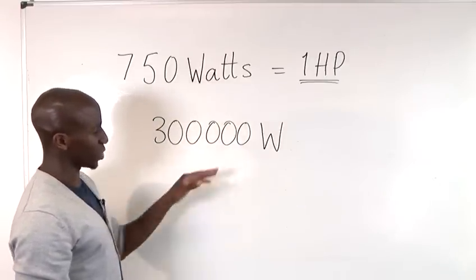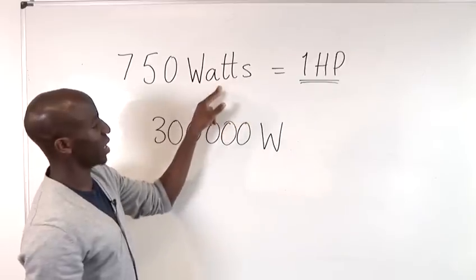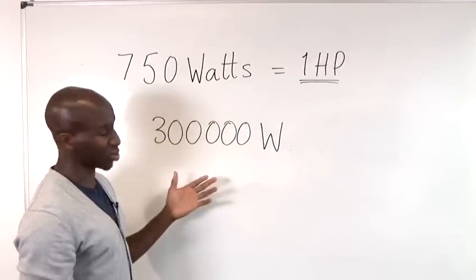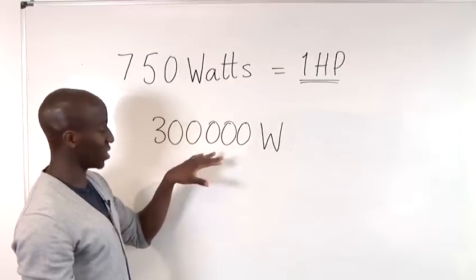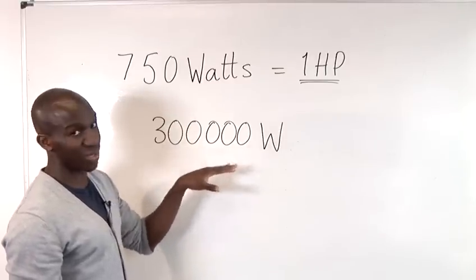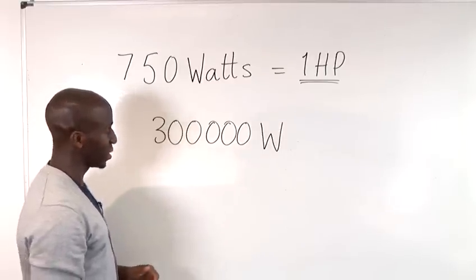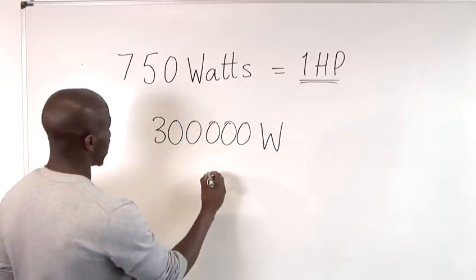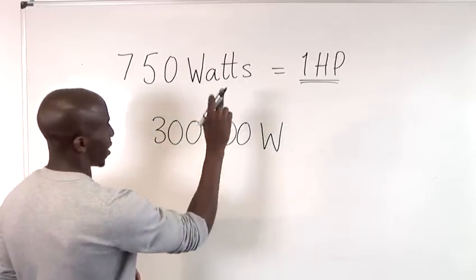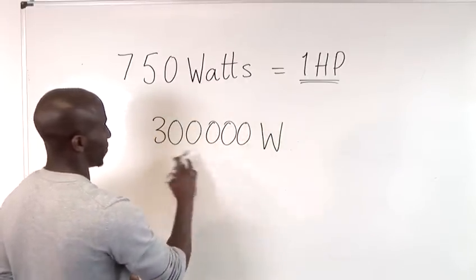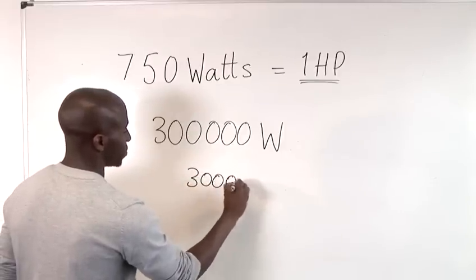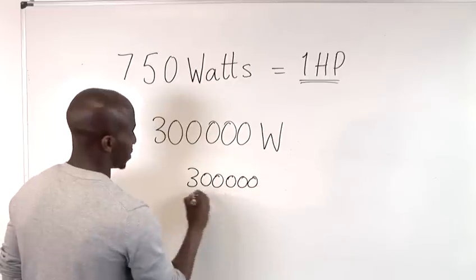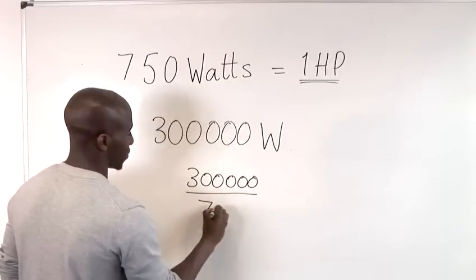Now, we want to use the calibration to see how many horsepower we find within a standard sports car that uses 300,000 watts for its engine. So, if we want to find out how many horsepower is within a car like this, we would say 300,000 divided by 750.